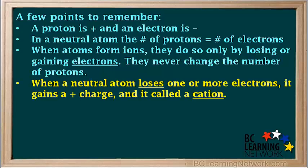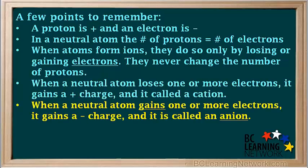When a neutral atom loses one or more electrons, it gains a positive charge, and it is called a cation. When a neutral atom gains one or more electrons, it gains a negative charge, and it is called an anion.